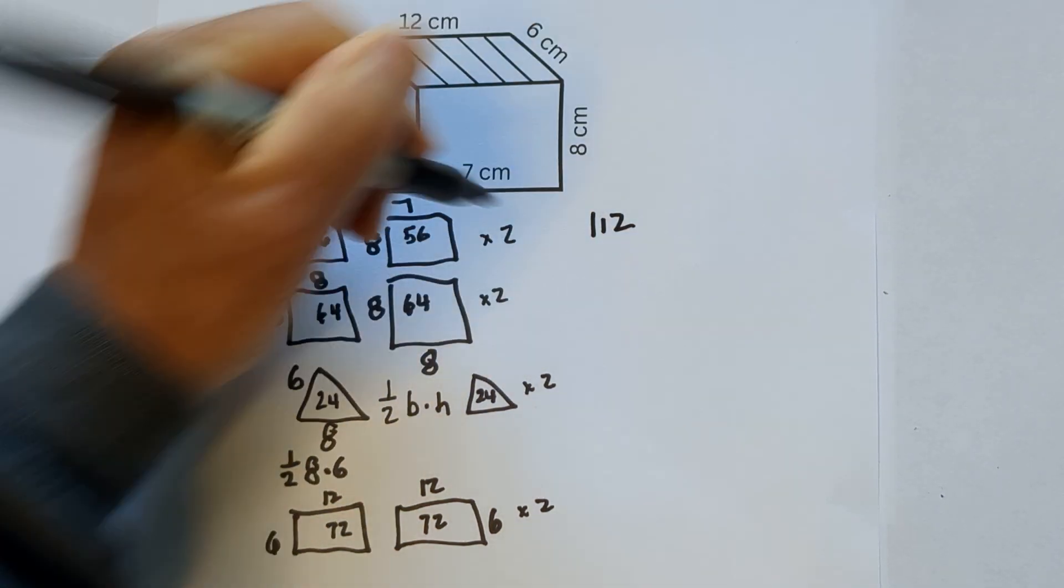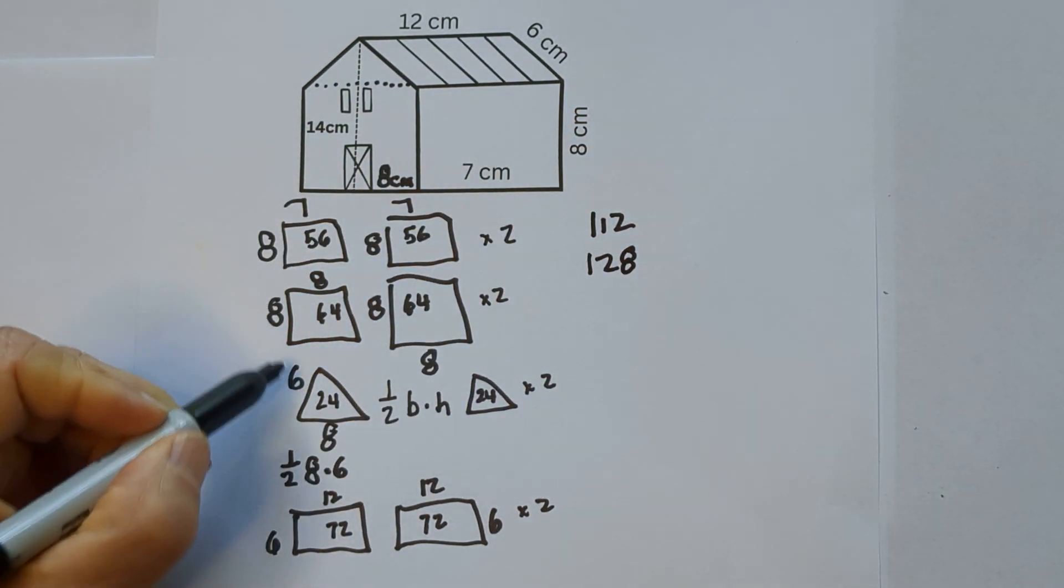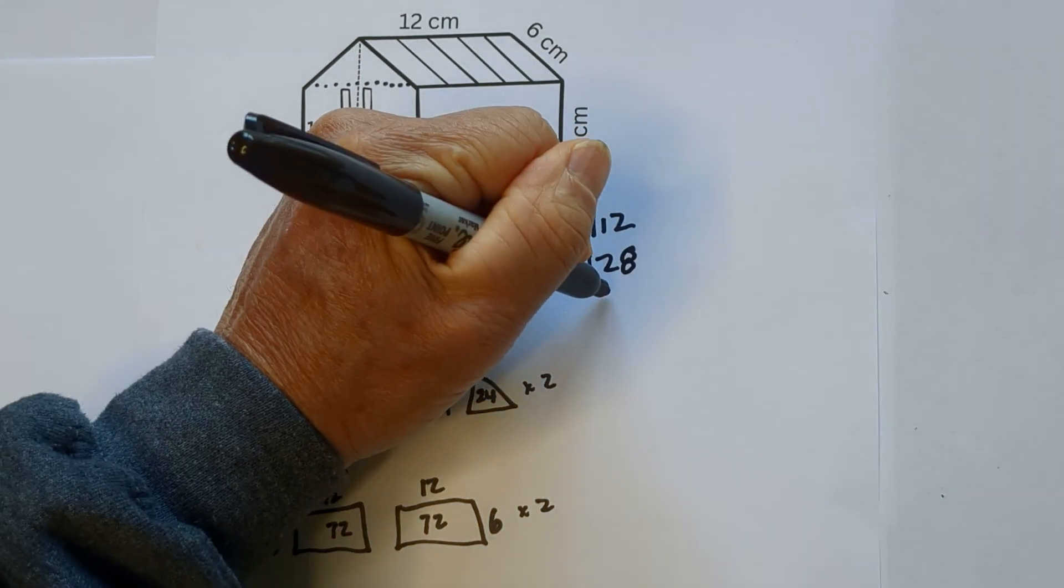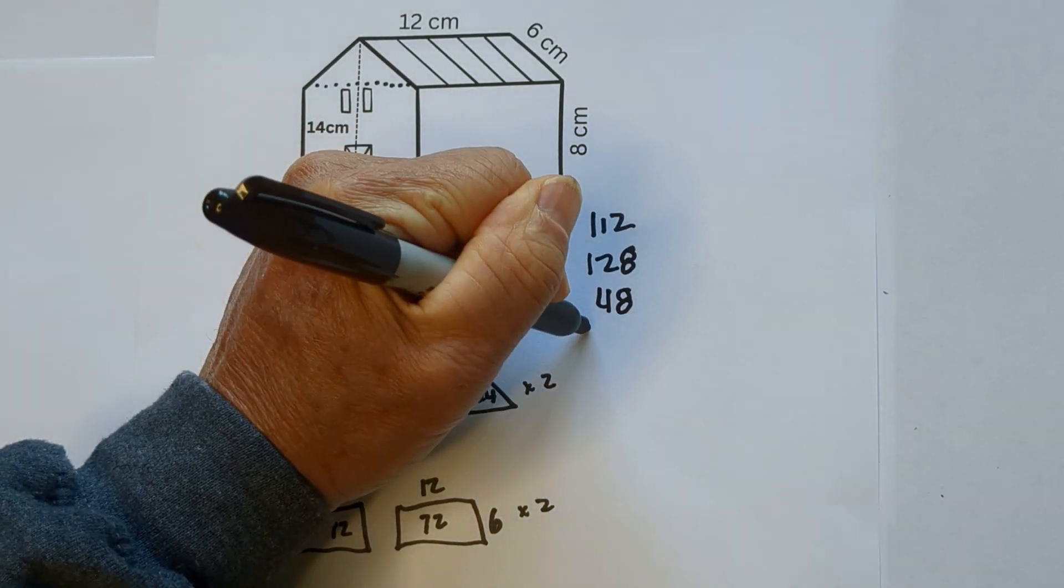64 times 2 is 128. 24 times 2 is 48, and then we have 72 times 2 and that's 144.